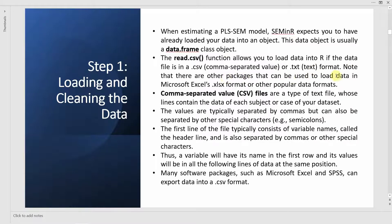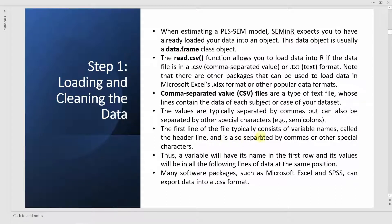Note that there are other packages that can help you load data in Excel format or other popular formats, but for this series we are going to use the comma-separated values version. A CSV file is a text file whose lines contain data for each subject or case in your dataset. The values are typically separated by commas — that's why it's called comma-separated values — but they can also be separated by other characters like semicolons. The first line contains your variable names, and the lines afterwards contain all the values for the corresponding variables.